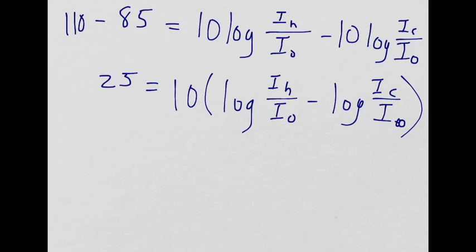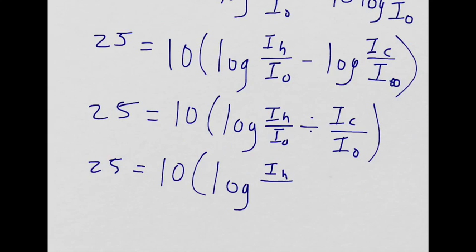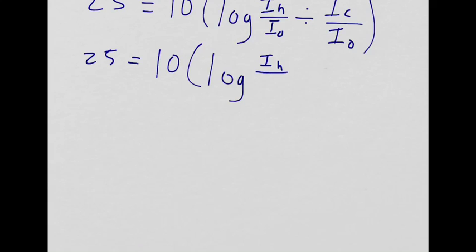So I have 25 equals 10 log IH over I naught times I naught over I chainsaw. Do you get why I did that? Should I back up? I did flip and multiply. Flip and multiply.